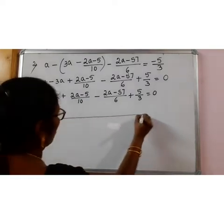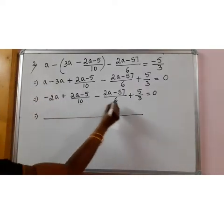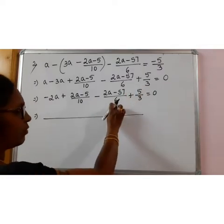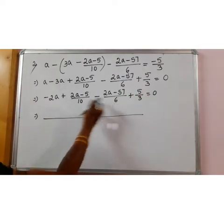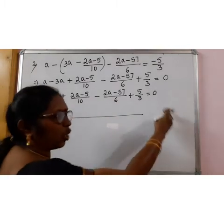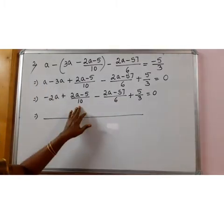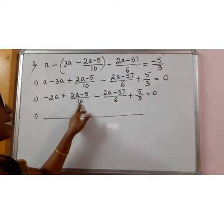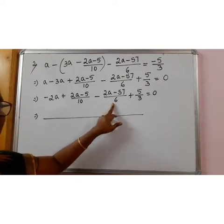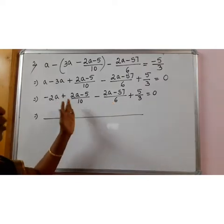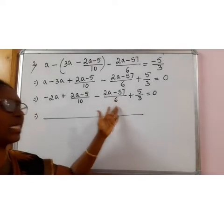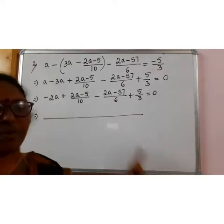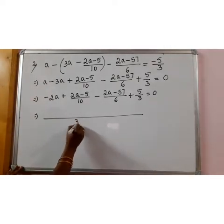Now let us find the LCM of these. Here 10, here 6, here 3. 6 is the factor of 3, 3 is the factor of 6. So we can see 10 and 6. You can find the shortcut method but this way also you can see 10 and 6, 10 is the bigger number. We can see 10 is not the multiple of 6, 10 to the 20, 20 is also not the multiple of 6. All 6 is not the factor of 20. 10 to 3 is the 30, 6 is the factor of 30. So 30 is the LCM.